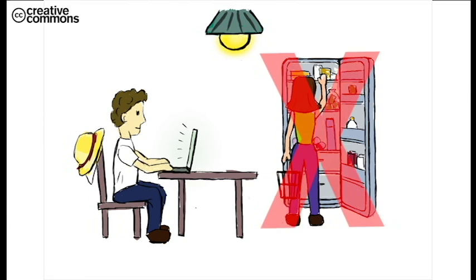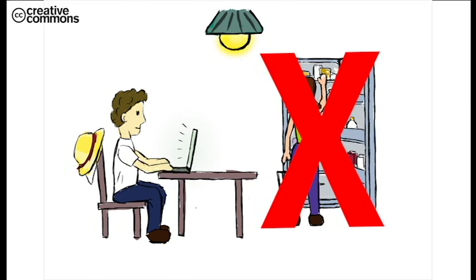Problems such as food spoiling quickly due to lack of refrigeration can cause farmers to be unable to sell produce and feed their families. Problems such as lack of internet or even the lack of lighting at night and all the problems that brings.